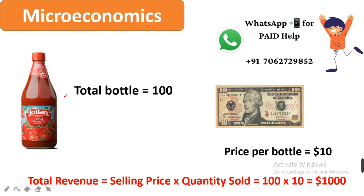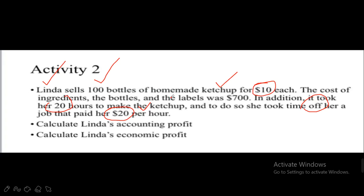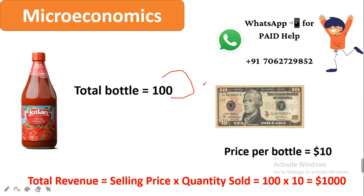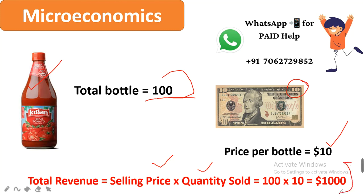Linda is producing 100 bottles and each bottle is priced at $10. Total revenue equals selling price multiplied by quantity sold: 100 bottles times $10 equals $1,000. So the total revenue is $1,000.